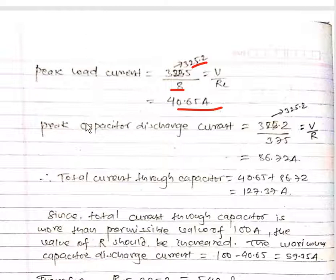The peak load current will be 40.65 and the peak capacitor discharge current will be V upon R. We have calculated V as 325.2 and R is 3.75, so on calculating this we have 86.72 amperes.